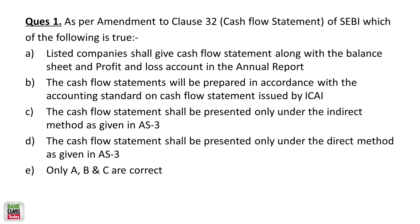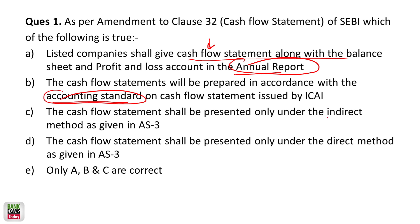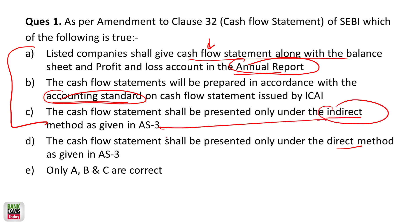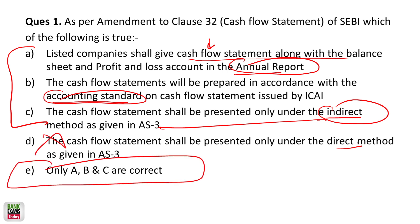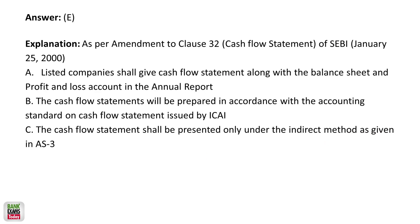Question number one: as per the amendment to clause 32 of SEBI, which of the following is correct? A listed company shall give a cash flow statement along with the balance sheet and profit and loss account in the annual report. The cash flow statement will be prepared in accordance with accounting standards. As per Accounting Standard 3, only the indirect method is used — so only A, B, and C are correct. D is not correct because the direct method is not used.